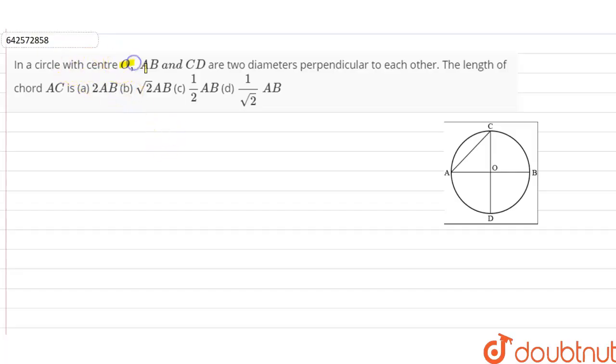...a circle with center O. AB and CD are two diameters perpendicular to each other. The length of chord AC is... So in the question it is given that AB and CD are the two diameters and are perpendicular to each other. Therefore we can say...